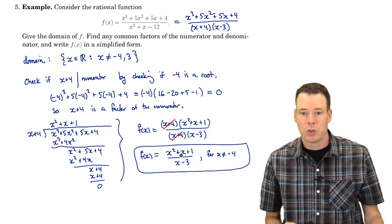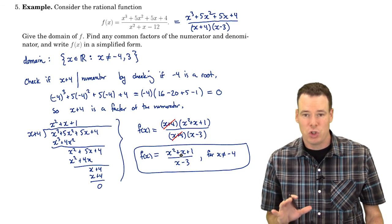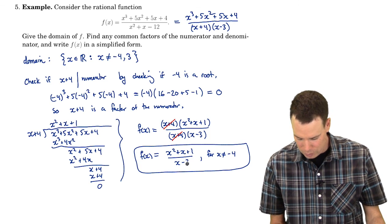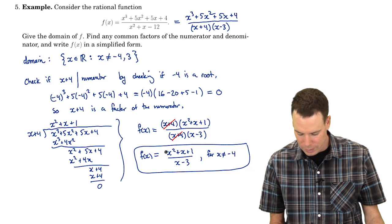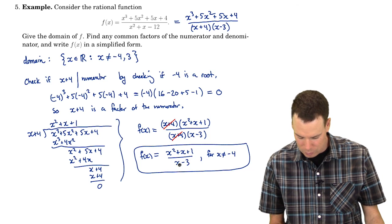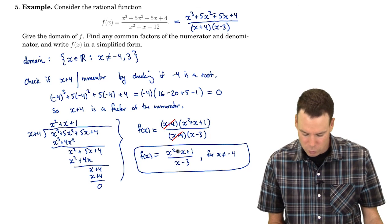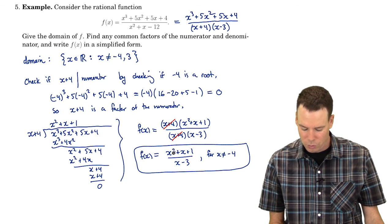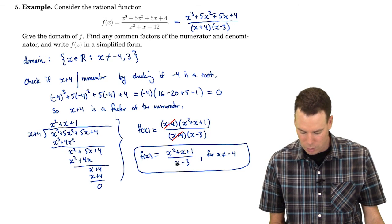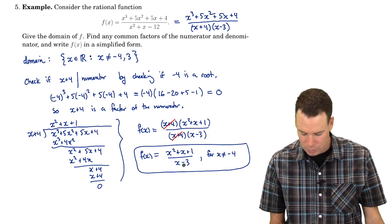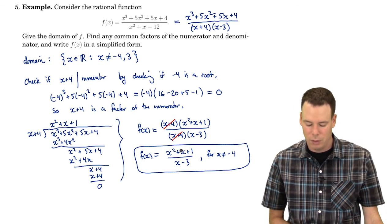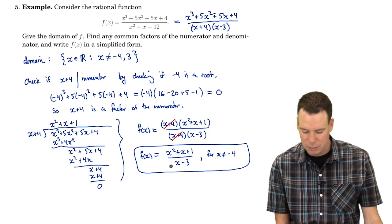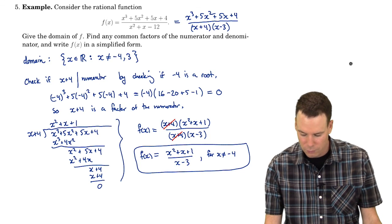I should also check whether x−3 is a factor of the numerator. If it were, then 3 would be a root of x² + x + 1. Plugging in: 9 + 3 + 1 = 13, which is not 0. So 3 is not a root, x−3 is not a factor of the numerator, and our simplified form is confirmed: (x² + x + 1)/(x−3) for x ≠ −4.